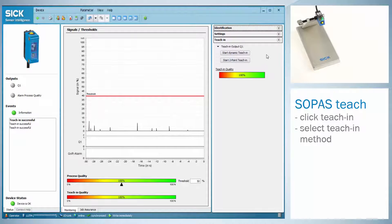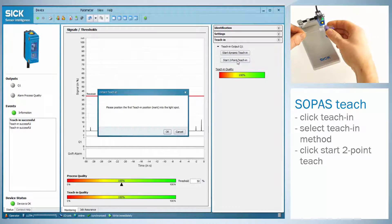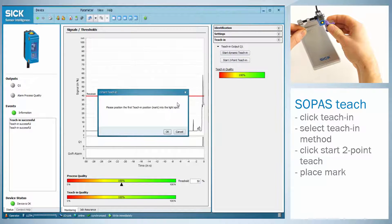Perform the teach-in procedure as described before in the manual mode. For the two-point or static teach, click on start two-point teach and place the mark under the light spot.